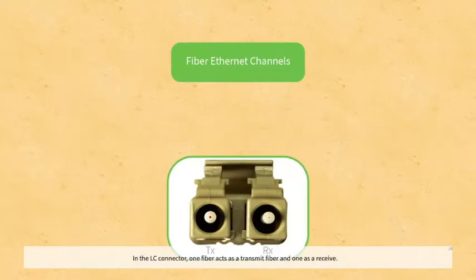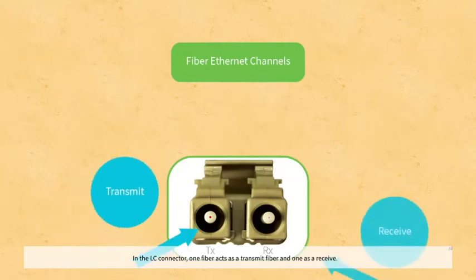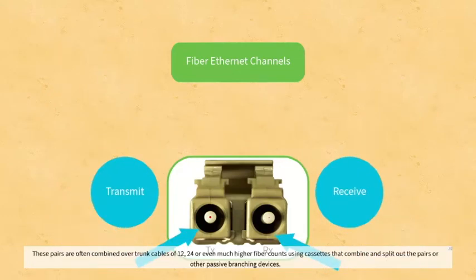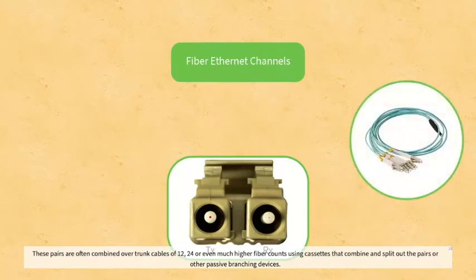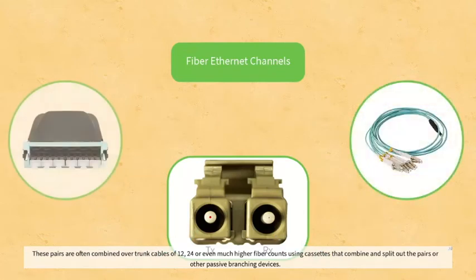In the LC connector, one fiber acts as a transmit and the other as a receive. These pairs are often combined in trunk cables of 12, 24, or even much higher fiber counts using cassettes that combine and split out the pairs or other passive branching devices.